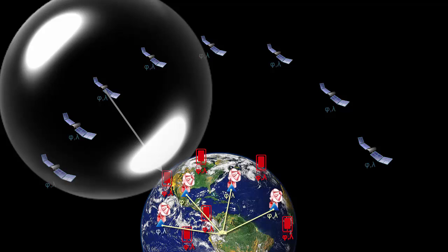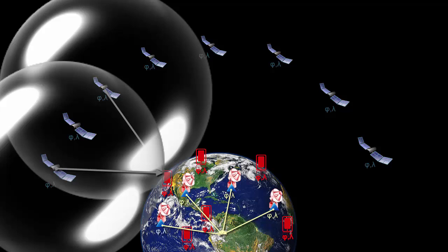However, another satellite that is currently orbiting above in the sky comes in for help. The same process is repeated and another sphere is created. Now we know that the GPS device is located at the intersection line created by the two spheres. Where exactly, we still don't know.